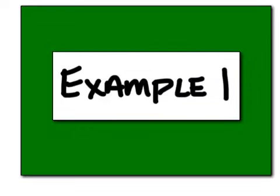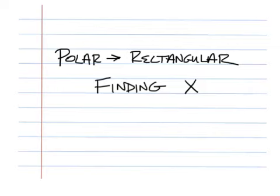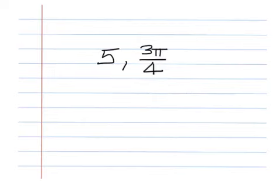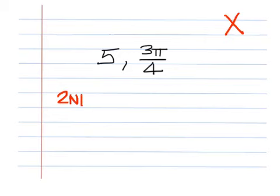Example number 1: polar to rectangular, finding X. The problem is find X if you know the polar coordinate (5, 3π/4). You don't need graph paper for this. What you must do on your calculator is hit Second and then hit the Apps button, which is below X.